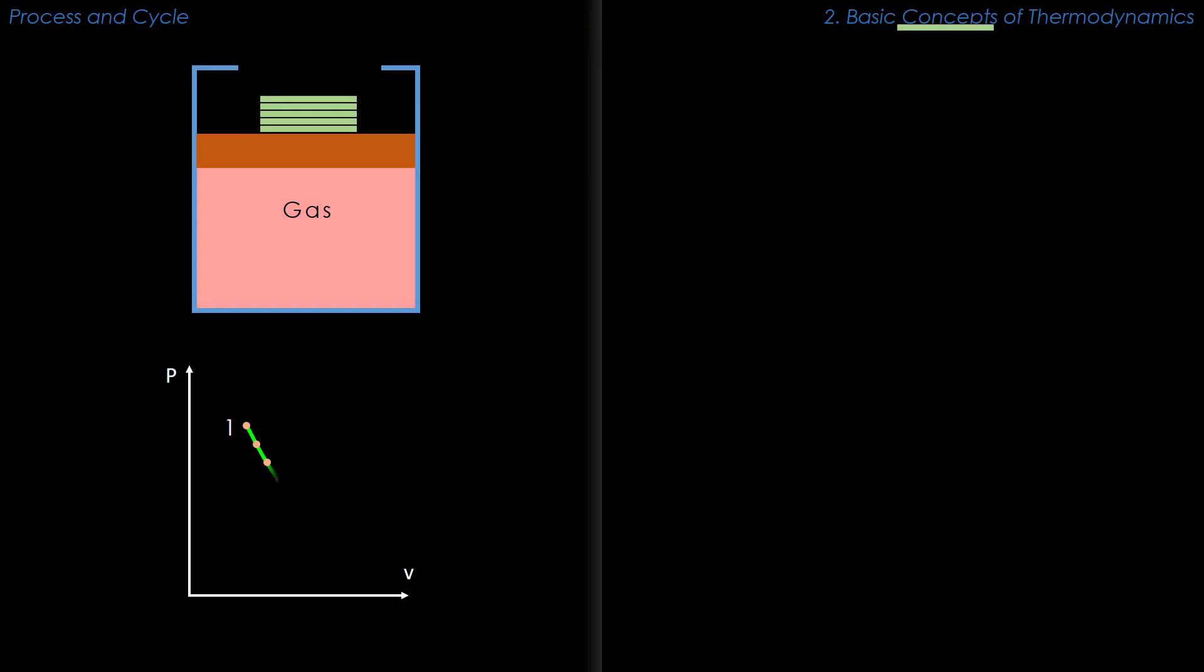Now, if each of the weights is removed one after another over an infinite period of time, with the system traversing from different equilibrium states before reaching state 2,